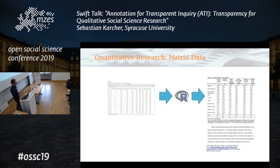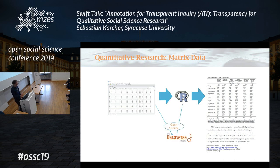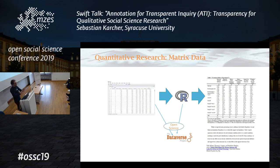For quantitative research, we have a pretty good model. I'm simplifying here, but our basic model is this: we have our data in rows and columns, in a matrix. We have some code that we use to analyze the data. We use those two things to produce a figure or a table in our publication. We put the code and the data in a data repository — open science, everyone happy. I realize it's not fully open science, but it's good transparent research. It works pretty well.